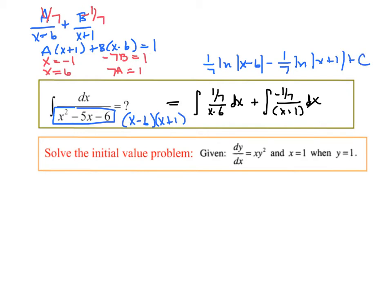Now, solve the initial value problem given the derivative is x times y squared. We need a y equals equation. Sometimes on the AP exam this is called finding the particular solution. Since y appears on both sides, the only way to do that is by doing a separable differential equation.